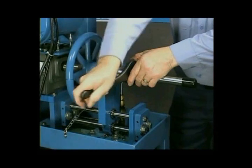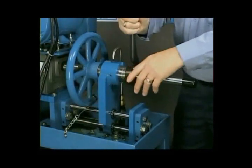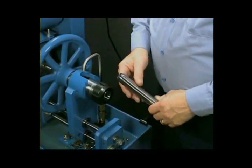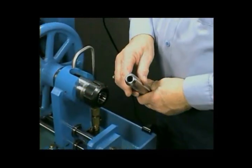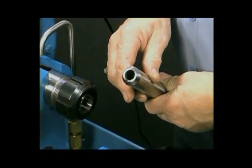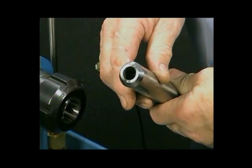Take the spanner wrench and loosen the collet nut, releasing the tubing from the collet. Remove the tubing and inspect the cone. There should be no score marks on the tube, and it should be completely faced. Deburr the inside of the tube. The coning operation is now completed.